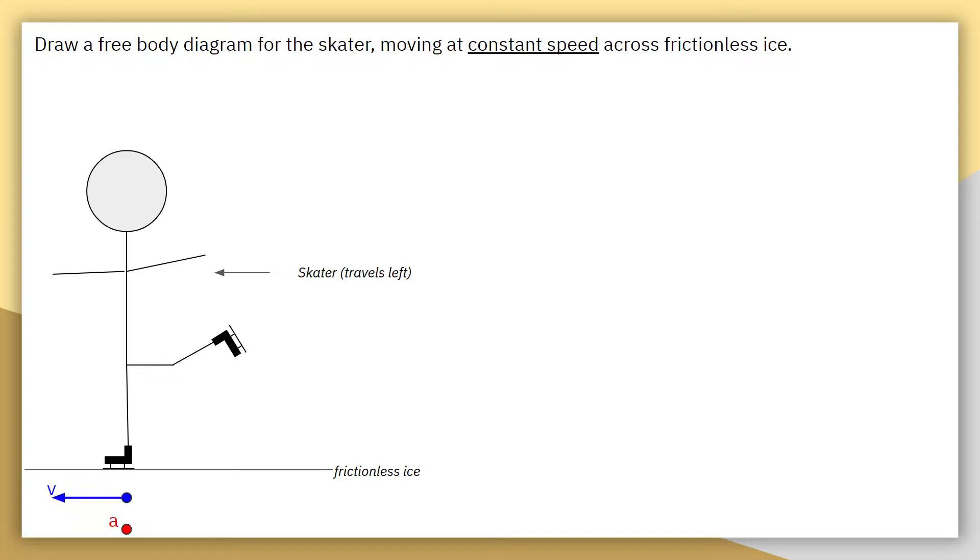So that means step one, we are going to be drawing our system boundary. But before that, I am also just identifying right here underneath my picture, two things that I know. I know that this skater is traveling to the left. And that's why I draw a velocity vector.